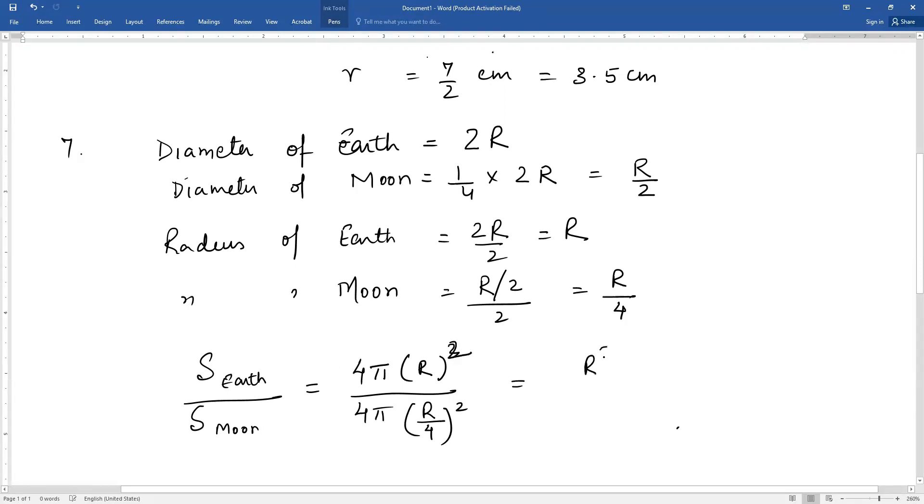This gives you 4πR². This gives you R² upon R² by 16. This gives you R² upon 1 into 16 upon R². The surface area of earth upon surface area of moon is 16 upon 1.